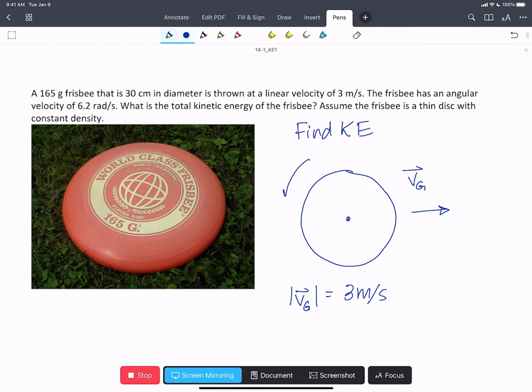We're also told it has an angular velocity omega, and the magnitude of that angular velocity is 6.2 radians per second.